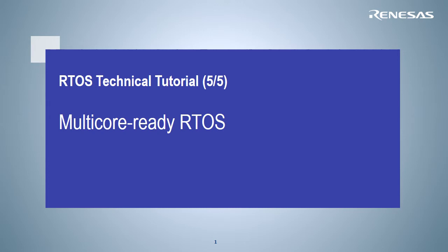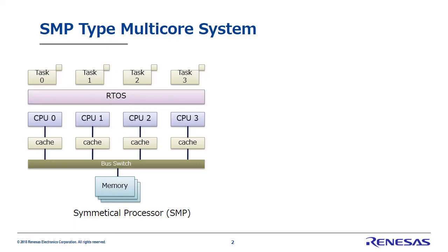In this section, we will introduce the benefits and drawbacks related to real-time OS for embedded systems equipped with multiple cores. First, let's discuss SMP type multi-core systems.